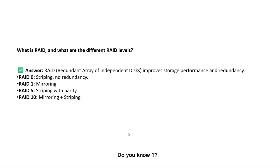What is RAID and what are the different RAID levels? RAID stands for Redundant Array of Independent Disks, which improves storage performance and redundancy. RAID 0 is for striping with no redundancy. RAID 1 is for mirroring. RAID 5 is for striping with parity. RAID 10 is for both mirroring and striping.